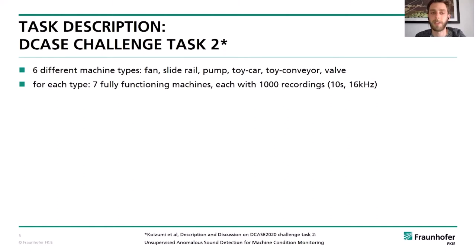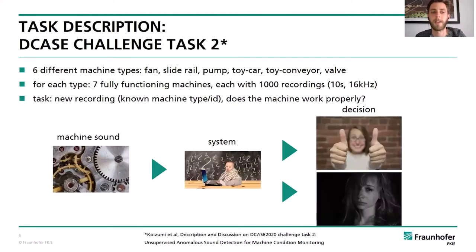For each of these machine types there are seven different machines, each of them fully functioning. For each of these machines we have 1000 recordings, each recording has a length of 10 seconds and a sampling rate of 16 kHz. The task is: when the system gets a new recording with a known machine type and machine ID, it needs to decide whether this audio file belongs to a machine that works properly or not.